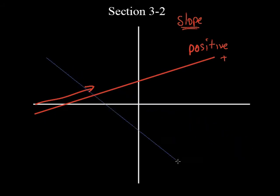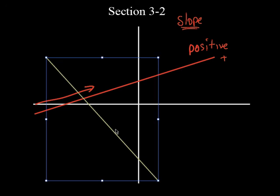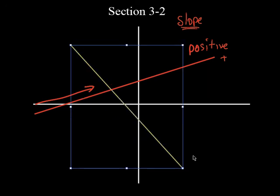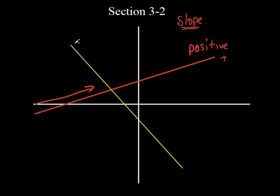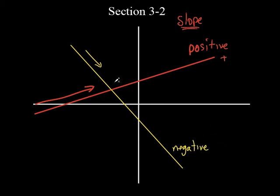What if you had a line? Let's make it a little steeper, just to make it look a little different. If you're sitting on top of this hill right here, from left to right, you would be going where? It would be going down. So we call this a negative slope. That's a negative slope because it's going down.